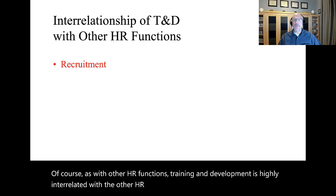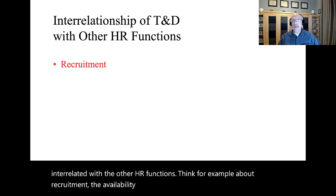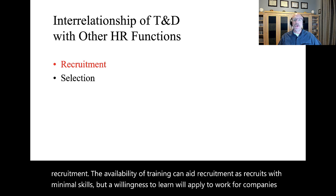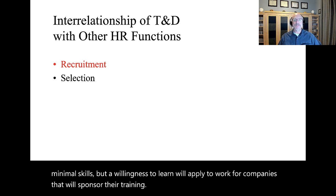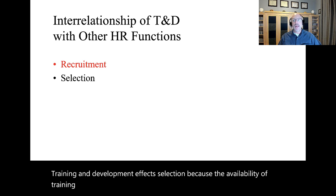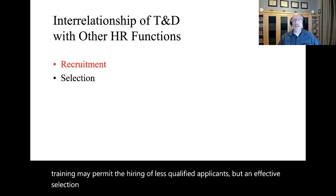Think, for example, about recruitment. The availability of training can aid recruitment, as recruits with minimal skills but a willingness to learn will apply to work for companies that will sponsor their training. Training and development affects selection because the availability of training may permit the hiring of less qualified applicants, but an effective selection system may reduce the amount of training needed by new employees.